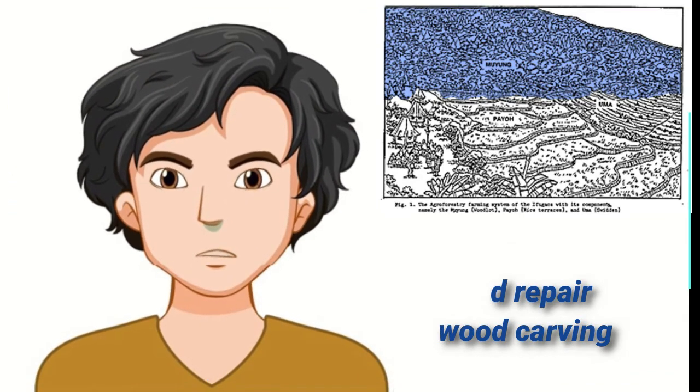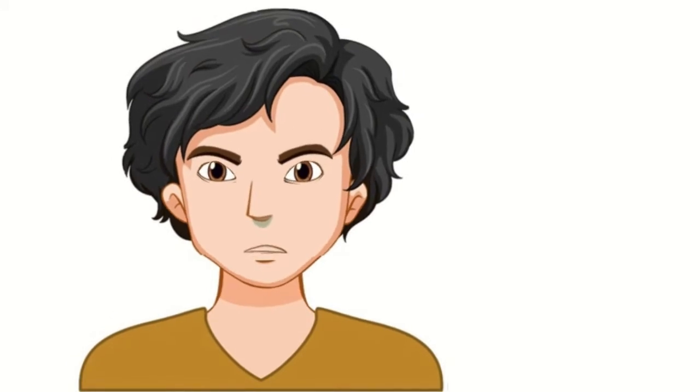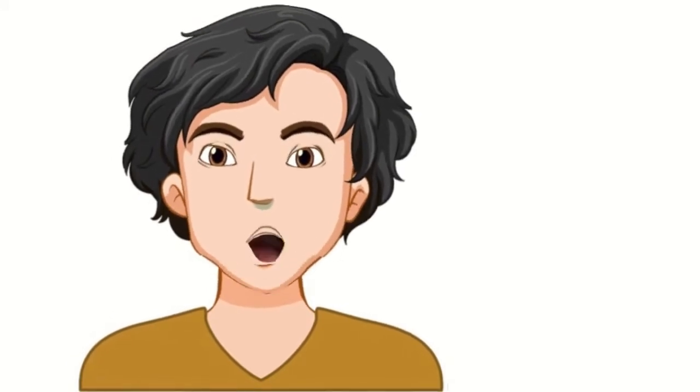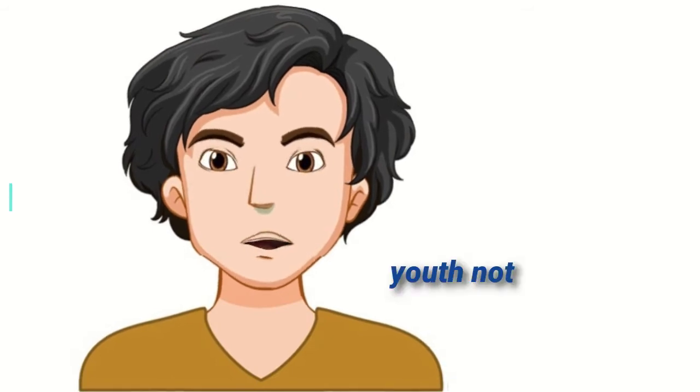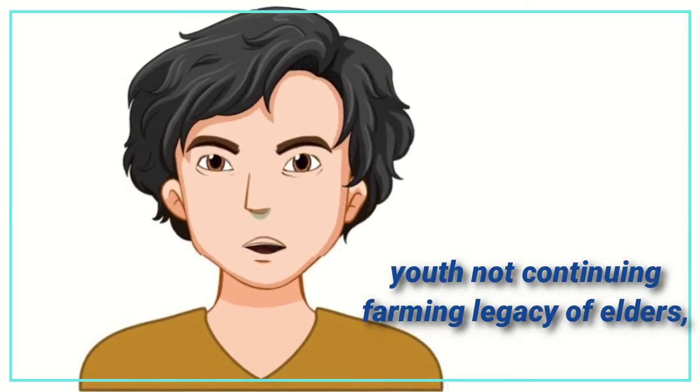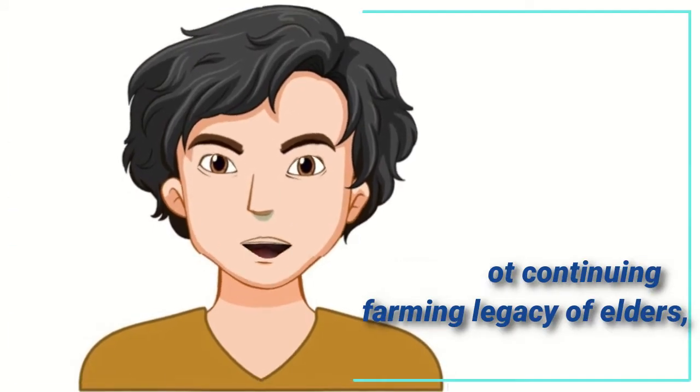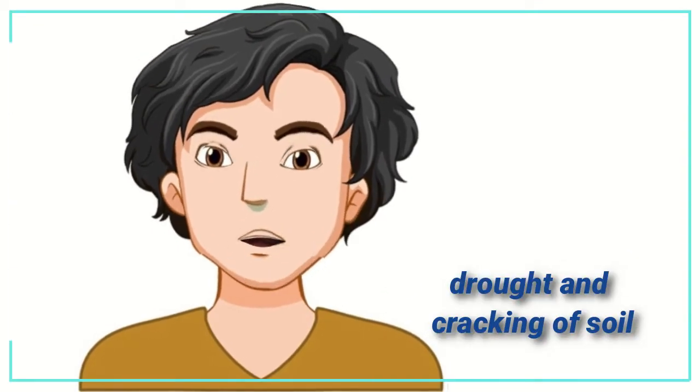A number of problems emerged in the farming system of the Ifugos. These include educated Ifugos youth not wanting to continue the farming legacy of their elders, drought and cracking of soil.